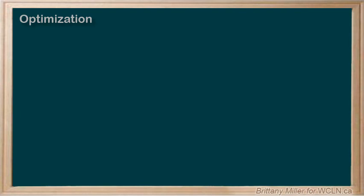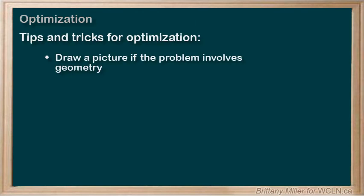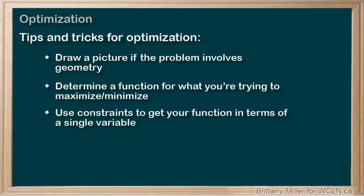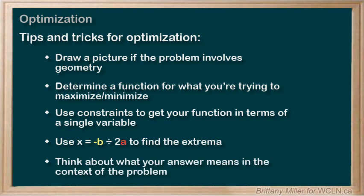That doesn't cover all of the types of optimization problems you might encounter, but here are some general steps to keep in mind. Draw a picture if the problem is talking about geometry. Determine a function for what you're trying to maximize or minimize. Use constraints from the problem to get your function in terms of just one variable. Use X equals negative B divided by 2A to find the extrema of your quadratic, or graph it using an online tool. Think about what your answer means in the context of the problem, and solve for any other values that the question is asking for.